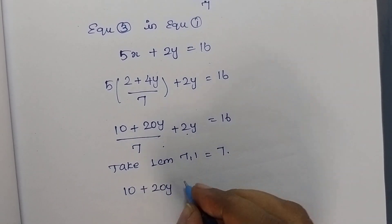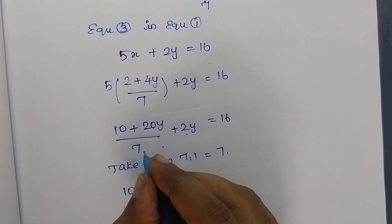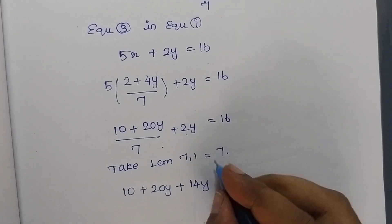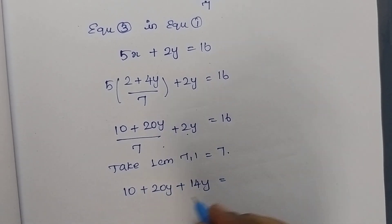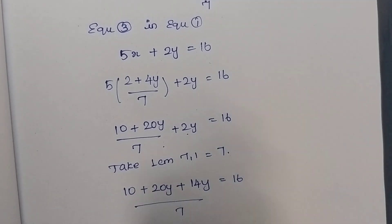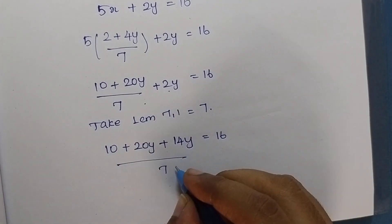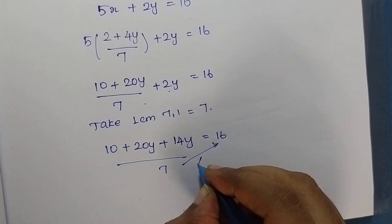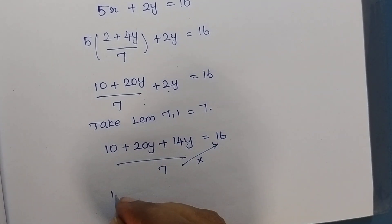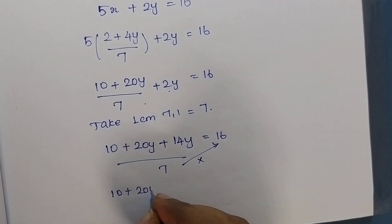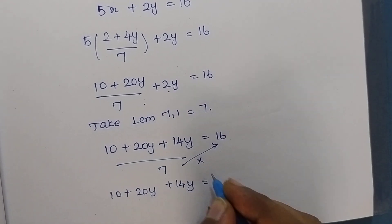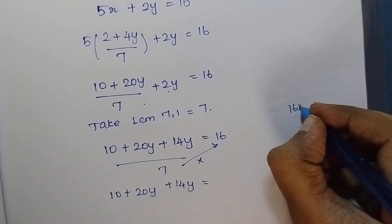Now I am going to take the LCM. The LCM for 7 and 1 is 7. So I multiply 2y by 7 to get 14y, and then perform cross multiplication so that the 7 moves to the other side. Therefore: 10 plus 20y plus 14y is equal to 16 into 7.